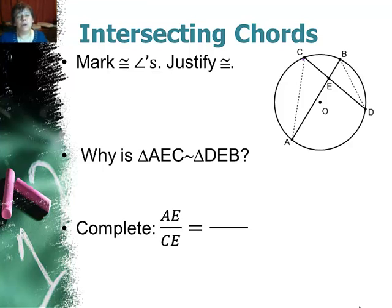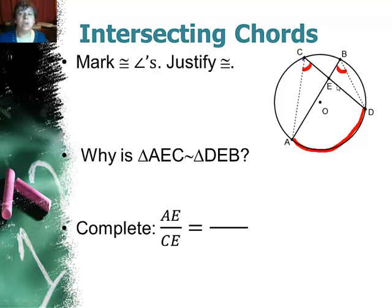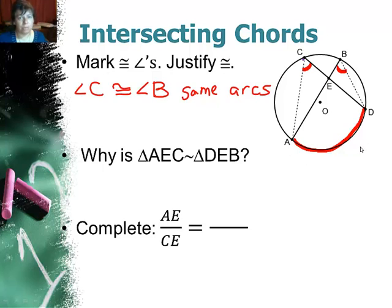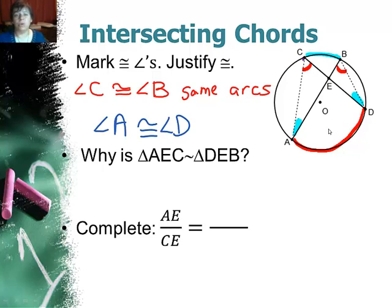In the first part of your notes, mark the congruent angles and justify them. Here I have arc AD, which corresponds to angles ACD and ABD — or just angle C and angle B. Since they intercept the same arc, they are both half of that arc measure; they're both inscribed angles, so they must be congruent. The reason is they intercept the same arc. Similarly, angle A and angle D intercept the same arc, so they are congruent — they're both inscribed angles.